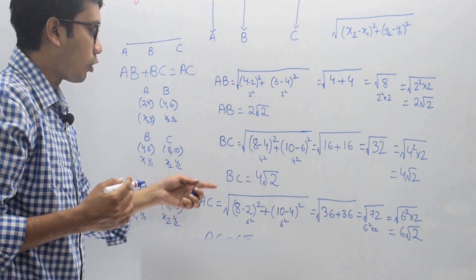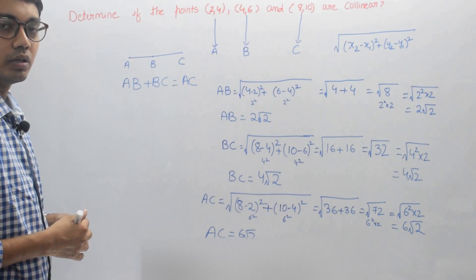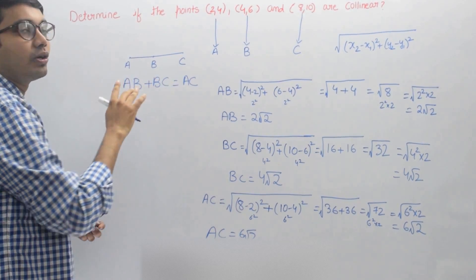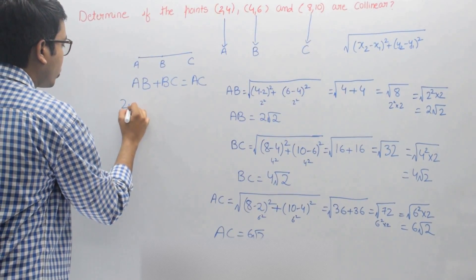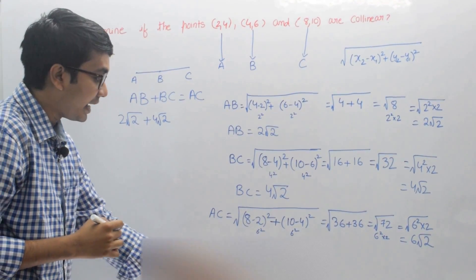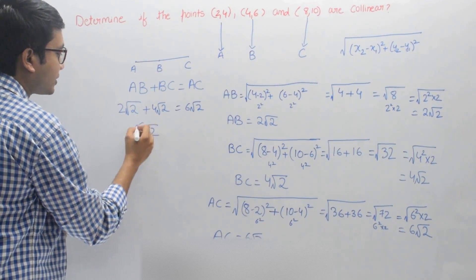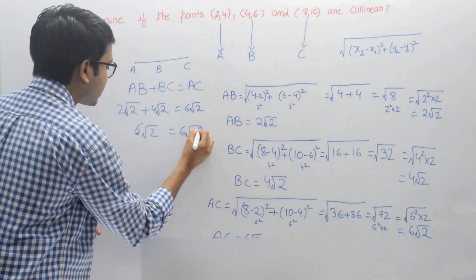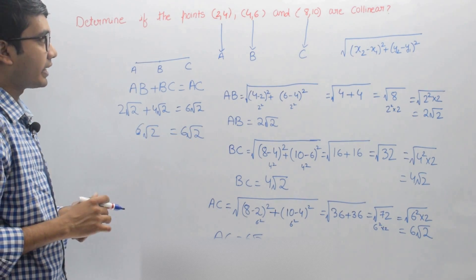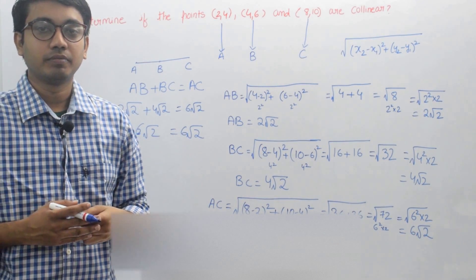We now have AB, BC, and AC. To check whether these points are collinear — that is, if they lie on the same straight line — they must satisfy the condition AB plus BC equals AC. AB is 2 root 2, BC is 4 root 2, and AC is 6 root 2. Indeed, 2 root 2 plus 4 root 2 equals 6 root 2, which equals 6 root 2. So we can say that the points (2,4), (4,6), and (8,10) are collinear — they lie on the same straight line. This is the concept of collinearity.